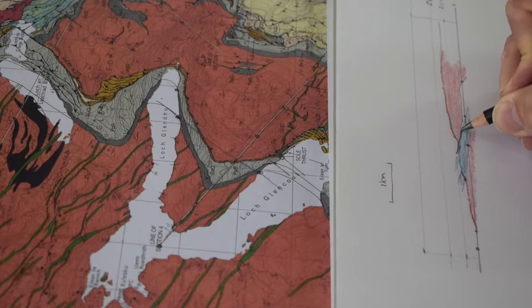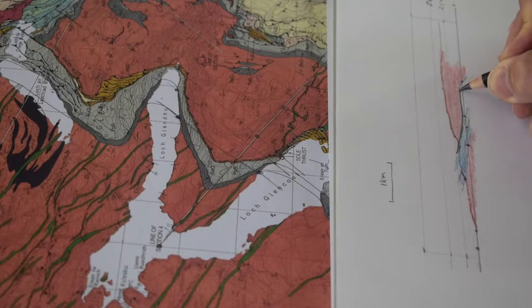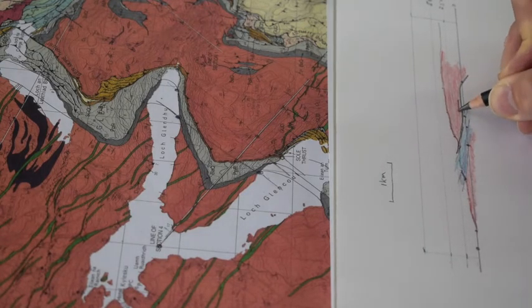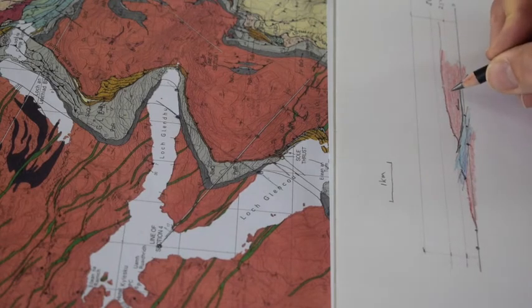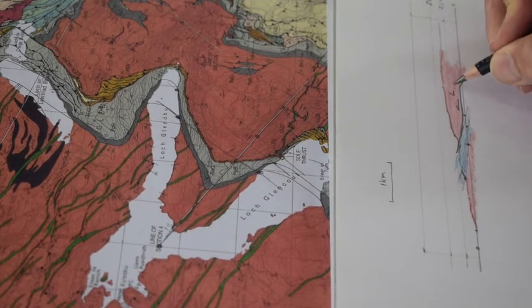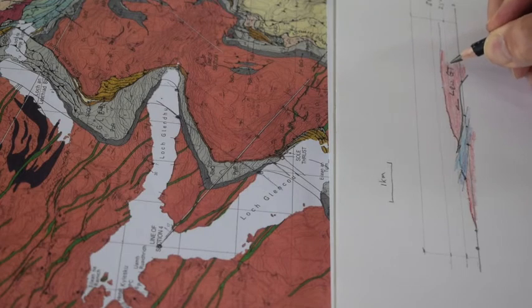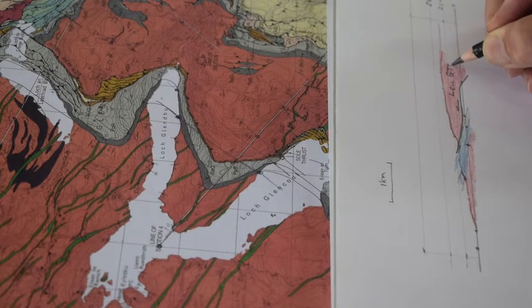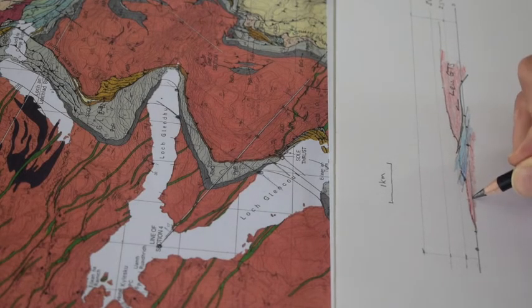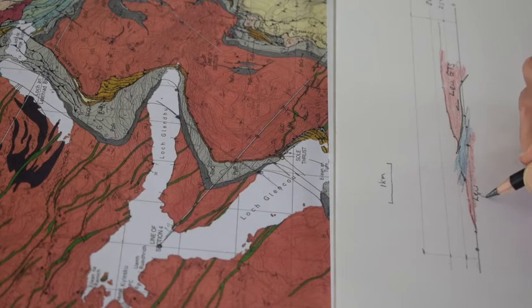It's coming along here at the base of that Lewisian sheet, like this, presumably moving in this direction. So that is Lewisian of the Glencool thrust sheet. This is Lewisian of the footwall.